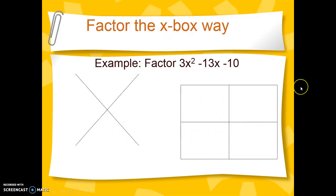Where Xbox does come in useful is when we have a problem where the lead coefficient is not just 1. For example, 3X squared minus 13X minus 10 — this 3 out front gives us issues when we try two-parenthesis factoring. It makes it challenging to figure out which parenthesis gets 3X versus X for the first term. This gets even more complicated when you have something like a 12, which has more than just two numbers that multiply together to give your product. So this is where I find X-box factoring the most useful.